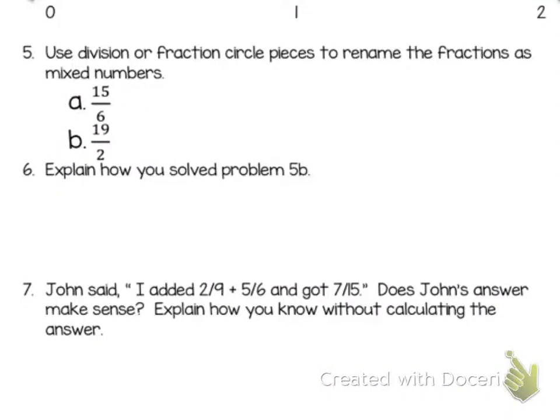Use division or fraction circle pieces to rename the fractions as mixed numbers. My hint to you for this one is count by your denominator. So if I write my multiples of 6, I have 6, 12, 18. The biggest number I can go up to without going over is 12. So 6 times what equals 12 is 2. So I had 2 wholes. And if I do 15 minus 12, because I took 12 away to make the 2 wholes, I have 3 sixths left over.